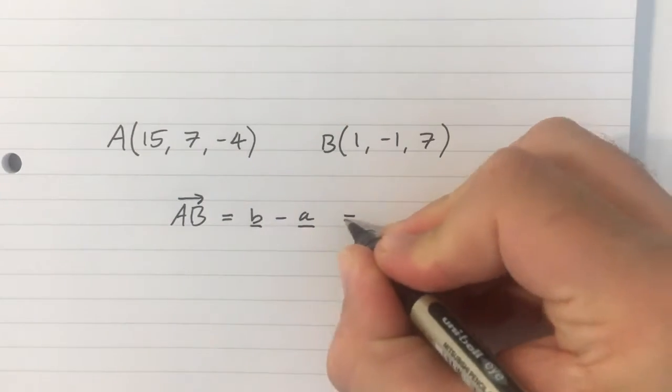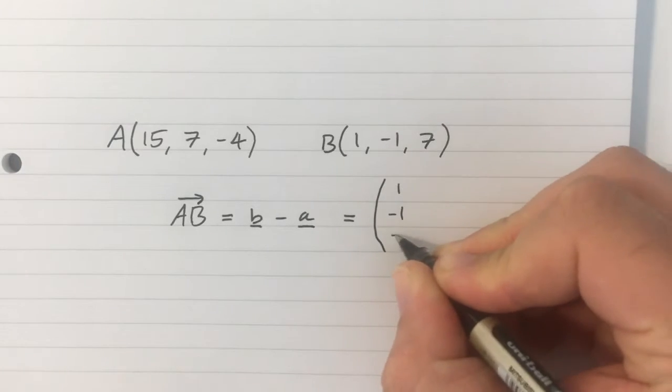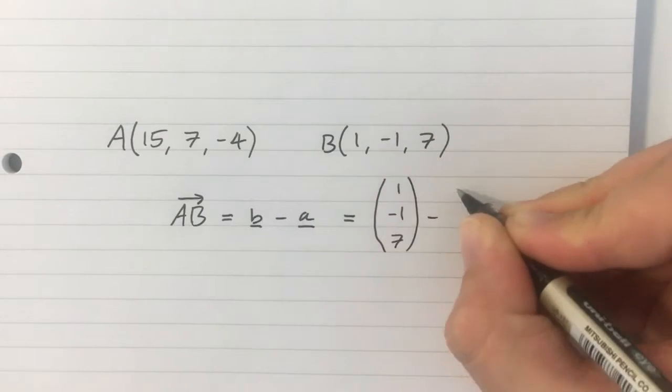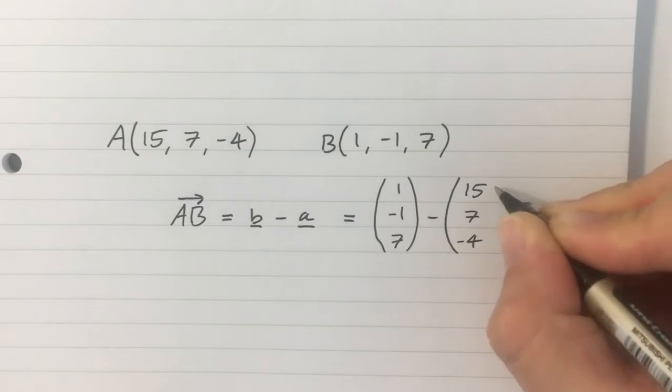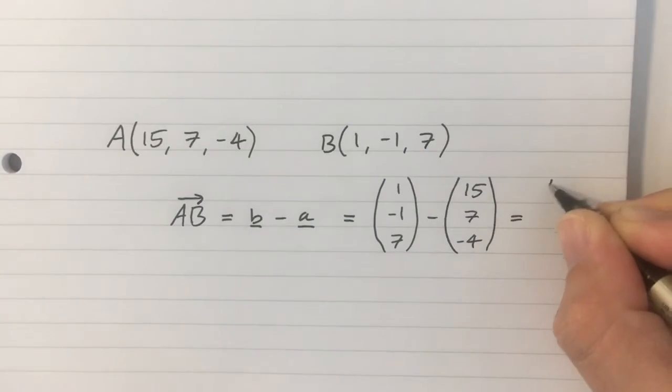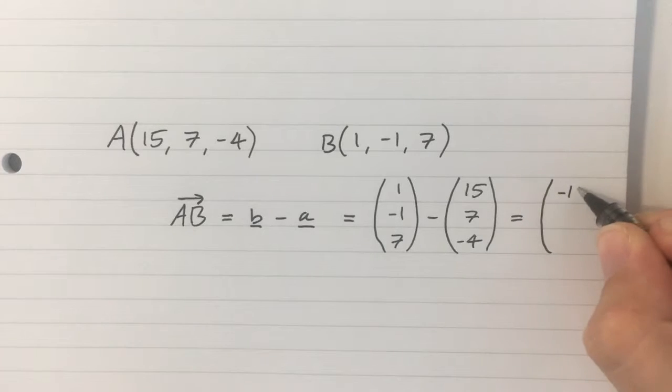So, in this case, that's going to be 1, minus 1, 7, subtract 15, 7, minus 4. And that is going to give us minus 14, minus 8, 11.